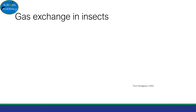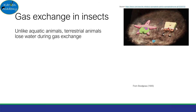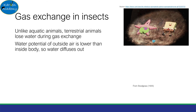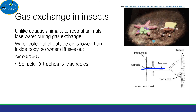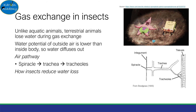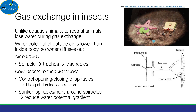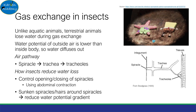Unlike fish, terrestrial organisms like insects lose water during gas exchange. This occurs because the water potential of outside air is lower than the water potential inside the body, so water diffuses out during breathing. Air reaches the respiring tissues of insects via spiracles, then through the trachea, and finally the tracheoles. Land animals need to reduce water loss, and they do this by controlling the opening and closing of spiracles using abdominal contraction. Additionally, some insects may have sunken spiracles or hairs around the spiracles, which reduce the water potential gradient and thereby limit water loss.